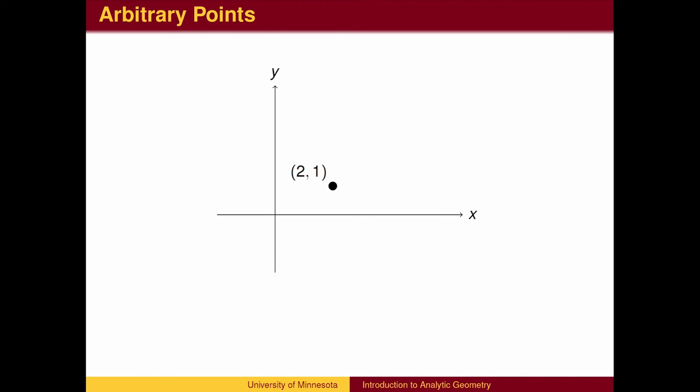What if we are interested in the slope between the point (2,1) and some other point, but in various applications, the other point keeps changing? We need a way to label this moving point. We do so with variables.